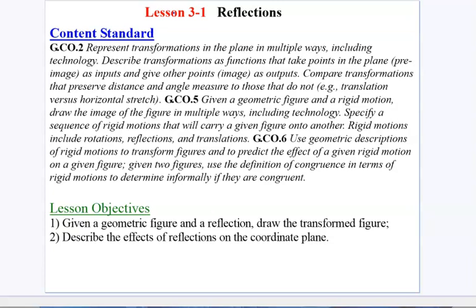We start a new chapter today, Chapter 3, and this is going to be a more in-depth look at a previous lesson, Lesson 1-7, where we talked about transformations. We spent time discussing three different transformations: translation, which is another word for a shift or a slide or a move; reflection, which is another word for a flip; and rotations. In Chapter 3, the text separates each of these into its own lesson. Today we're going to deal strictly with reflections.